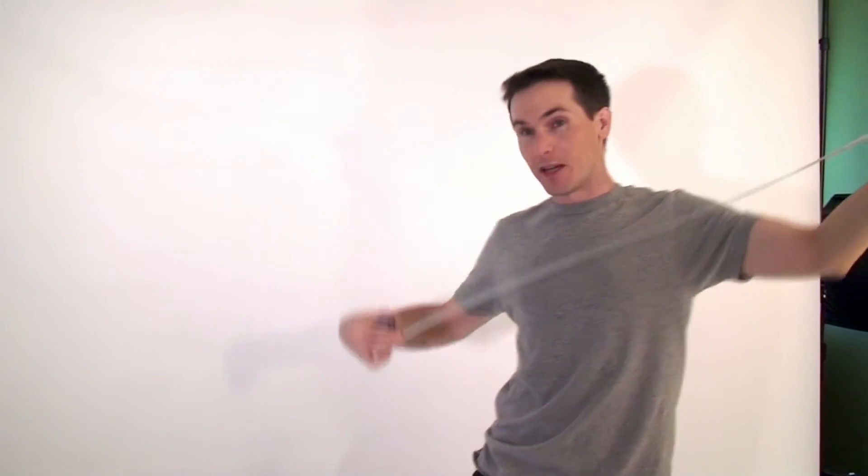Alright, our umbrella is now set up. It's almost touching the ceiling just because it's so large. Flash head is going to be about 65 inches, so a little over five feet away from me, and we'll see what kind of light this produces. Test one.